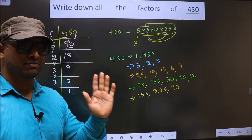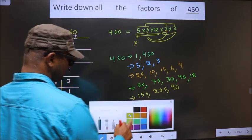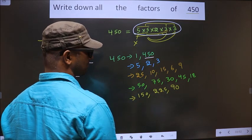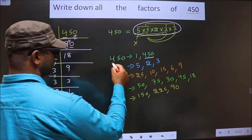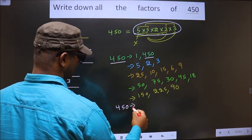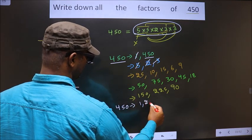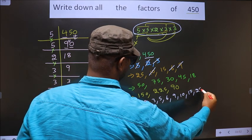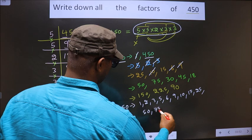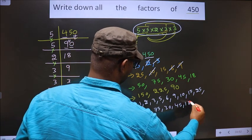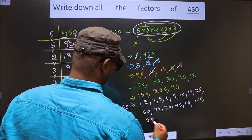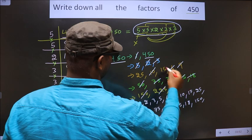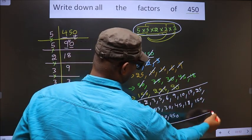Now take the combination of all 5 numbers. Here we have only 5 numbers, so if we take all 5 we get 450 itself. Thus these are all the factors of 450: 1, 2, 3, 5, 6, 9, 10, 15, 18, 25, 30, 45, 50, 75, 90, 150, 225, and 450.